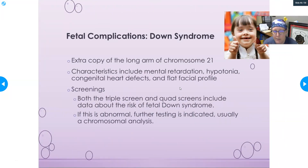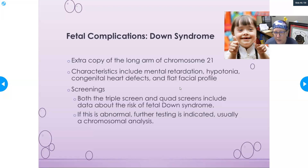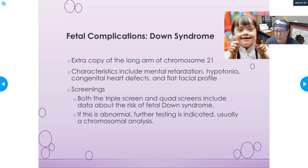Down syndrome involves an extra copy of the long arm of chromosome 21. Characteristics include intellectual disability, hypotonia, congenital heart defects — usually tetralogy of Fallot — and a flat facial profile. The triple and quad screens include data relevant to risk for Down syndrome. If the screen is abnormal, further testing is warranted, typically chromosomal analysis done via amniocentesis.